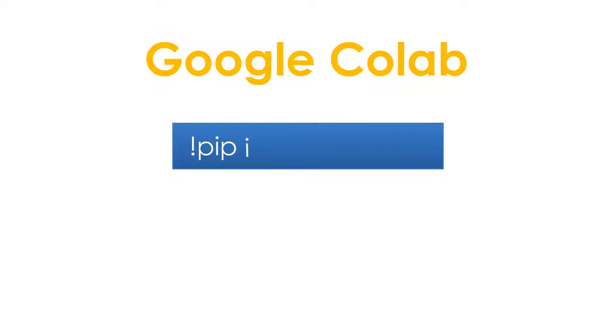We will be doing this tutorial on Google Colab. First, we need to install BlueCat in Google Colab. We can install BlueCat by a code, exclamation mark pip install BlueCat. Do not forget to put exclamation mark in the beginning.